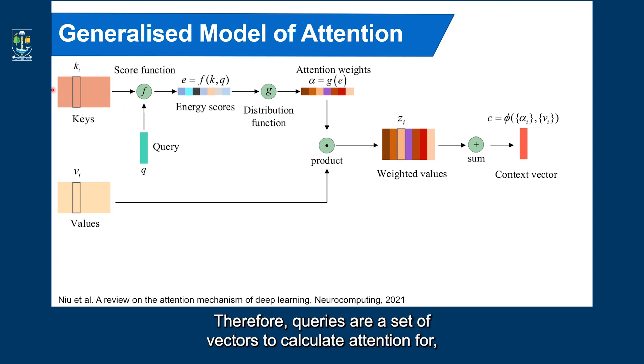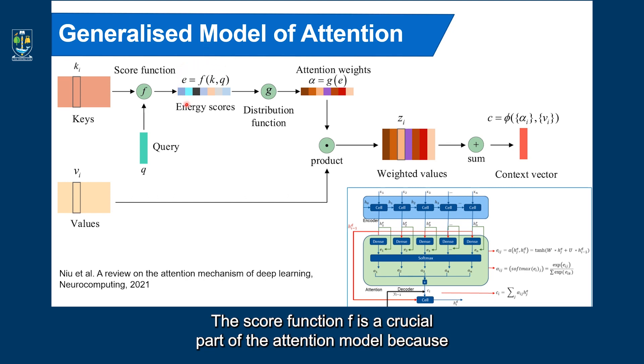Therefore, queries are set of vectors to calculate attention for, whereas keys is a set of vectors to calculate attention against. The score function F is a crucial part of the attention model because it defines how keys and queries are matched or combined. We've seen before the F function, which was equivalent to the alignment function, which was represented based on a dense layer and a tangent hyperbolic function.